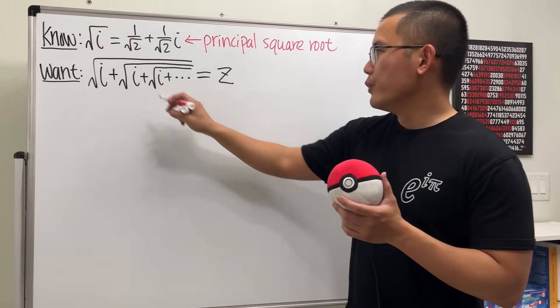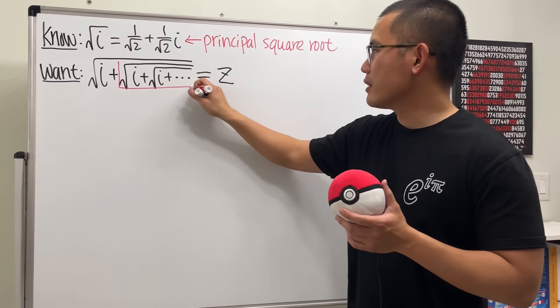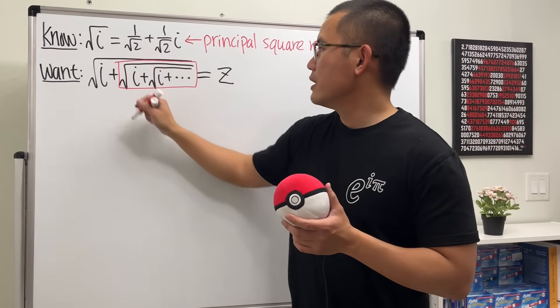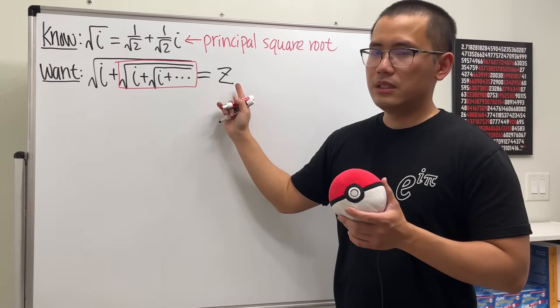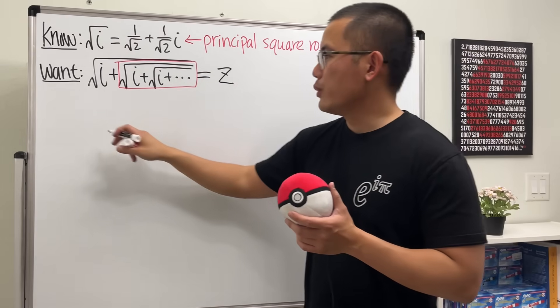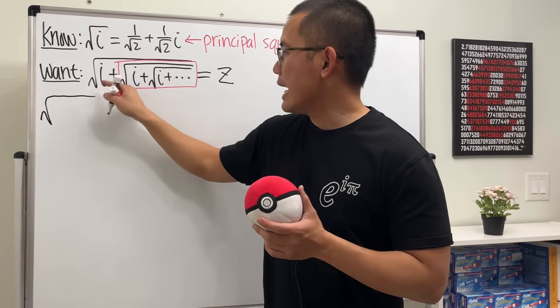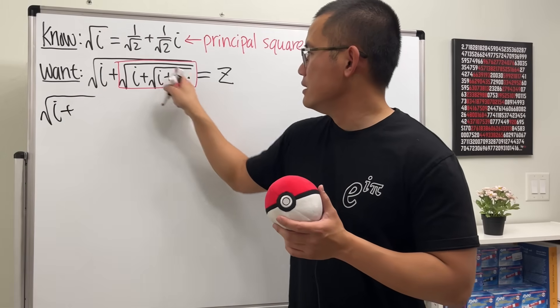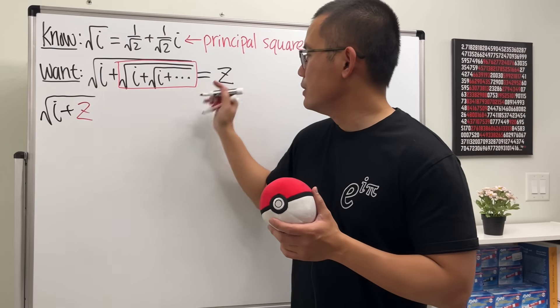To continue, we can just look at inside, right here, you know the usual strategy. This is actually the same as z, because this right here actually keeps on going on forever. So we can take this equation and write it as square root of i plus z, and that's equal to this z.